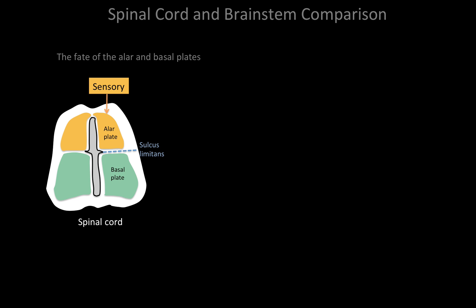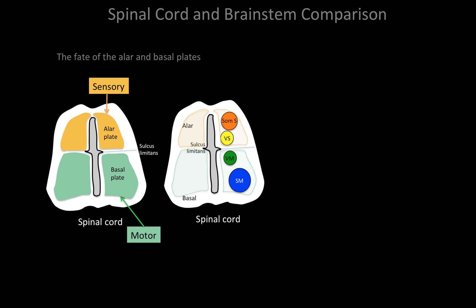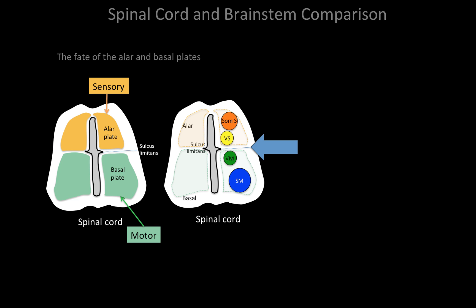Alar plates give rise to cells that deal with sensation or sensory input, and the basal plate deals with motor neurons. In the spinal cord's somatotopic organization, somatic sensory neurons are more towards the dorsal part, visceral sensory neurons are closer to the sulcus limitans but still behind it. Ventral to that, neurons in the basal plate close to the sulcus limitans become visceral motor neurons, and the more ventrally located ones become somatic motor neurons.